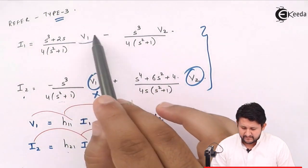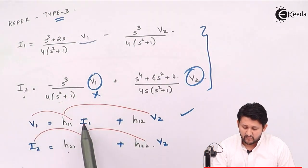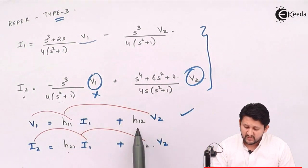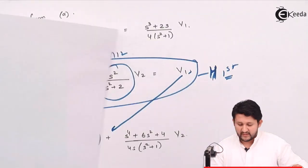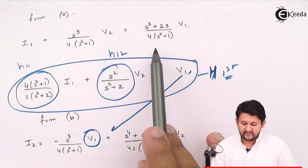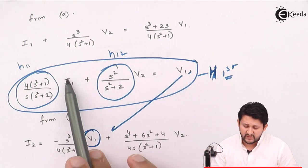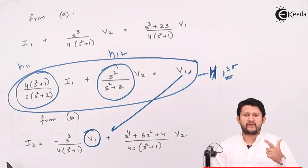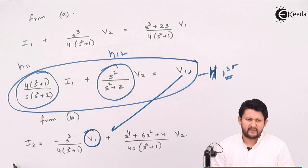From the second Y parameter equation, if I shift terms to isolate V1, I get V1 in terms of I1 and V2 — which is exactly what's required. So by rearranging that equation, I get the first H parameter equation. The coefficient of I1 will be H11 and the coefficient of V2 will be H12, giving me the two values H11 and H12.